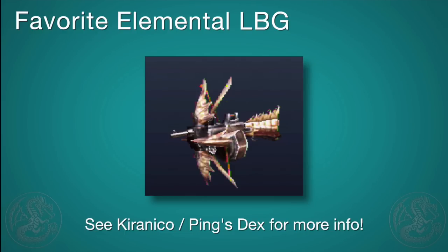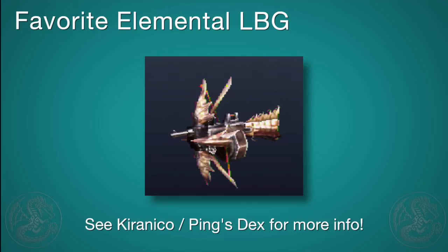Once White Fatalis becomes available in the west officially, there is a light bowgun for White Fatalis with really high attack at 403, and you can do rapid for every single elemental shot — all four of the major ones. Once that's out you're going to see a lot of people using it, and for good reason.